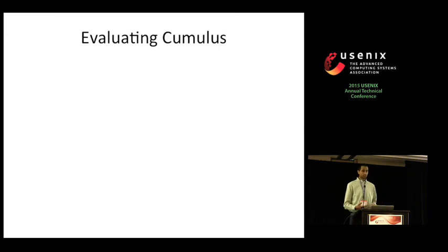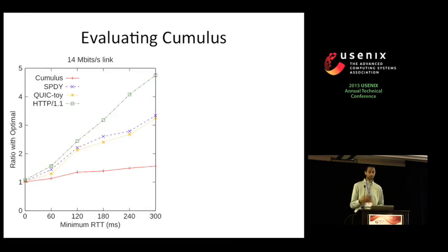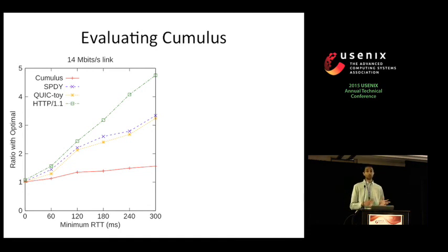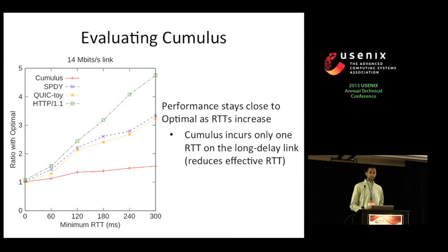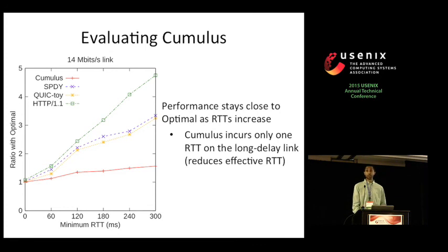To evaluate Cumulus, we loaded the Alexa top 500 pages over the same configurations as before. Here we plot results for a 14 Mbps link with RTTs from 0 to 300 milliseconds, with each point represented as a ratio to the optimal — so closer to one is better. Performance with Cumulus stays much closer to optimal as RTTs increase, whereas the other multiplexing protocols steadily move further from one with increasing RTT. This is because Cumulus only incurs a single RTT between the local proxy and the remote proxy on that long-delay link, reducing the effect of RTT experienced by the client browser.